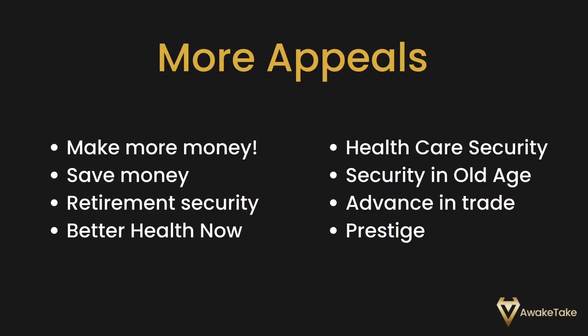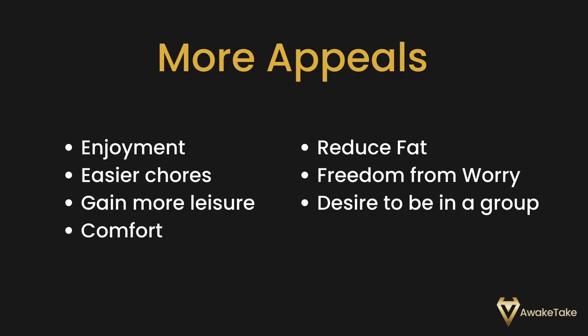There are also a few more primary appeals you can use in your headlines — some of these are actual words you might want to combine with others to form a full phrase or sentence. Here are some of them: make more money, save money, retirement security, better health now, healthcare security, security in old age, advance in your career, prestige, enjoyment, easier chores, gain more leisure, comfort, reduce fat, freedom from worry, and desire to be in a group. You will know that some of those appeals match needs found on Maslow's pyramid.